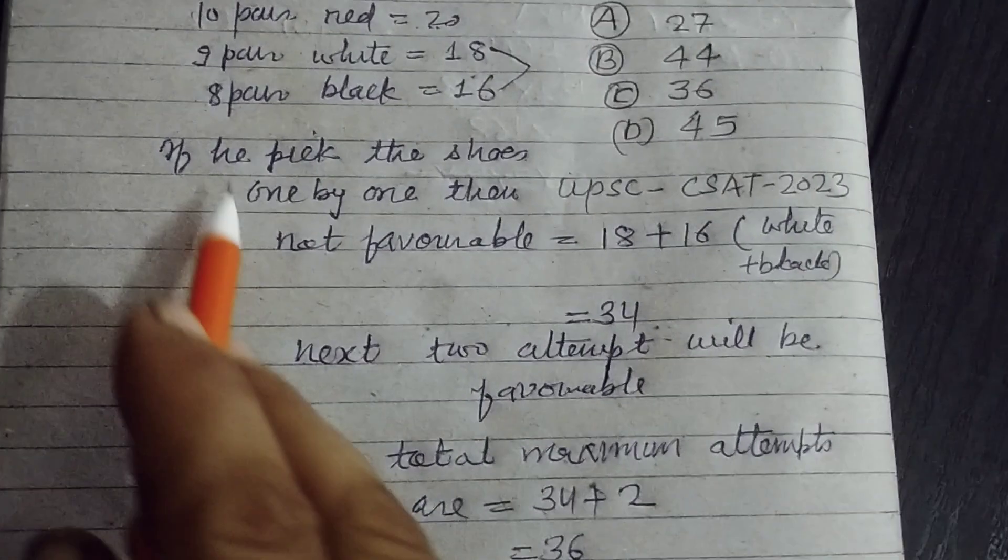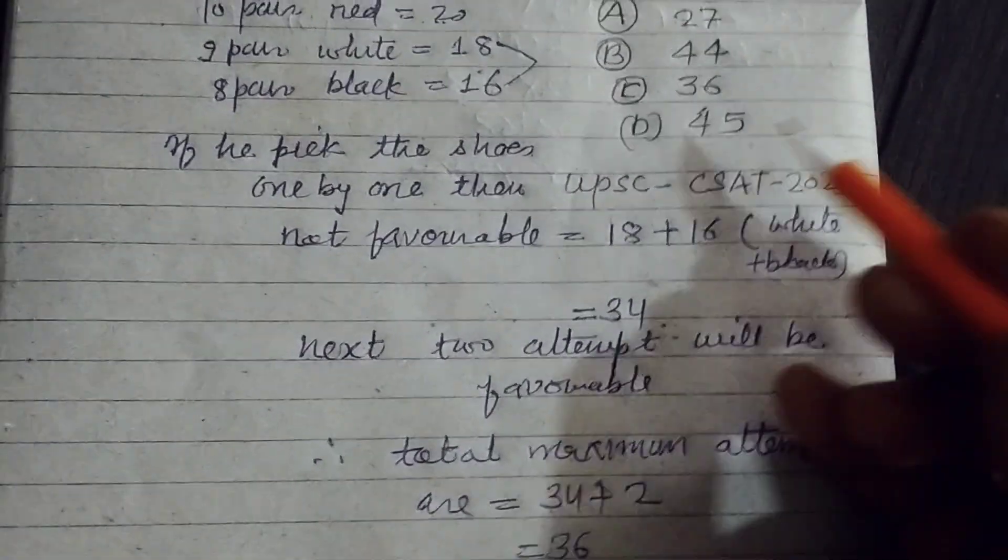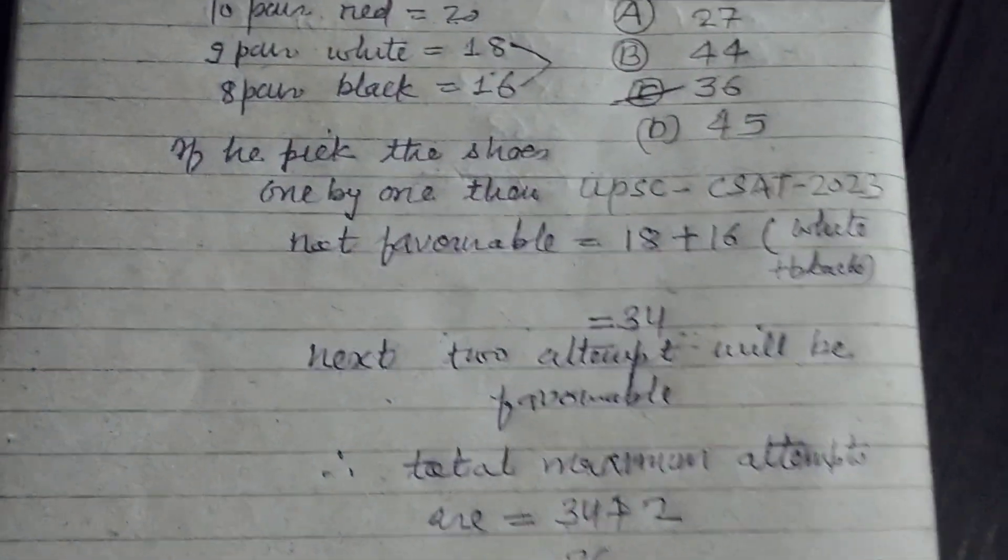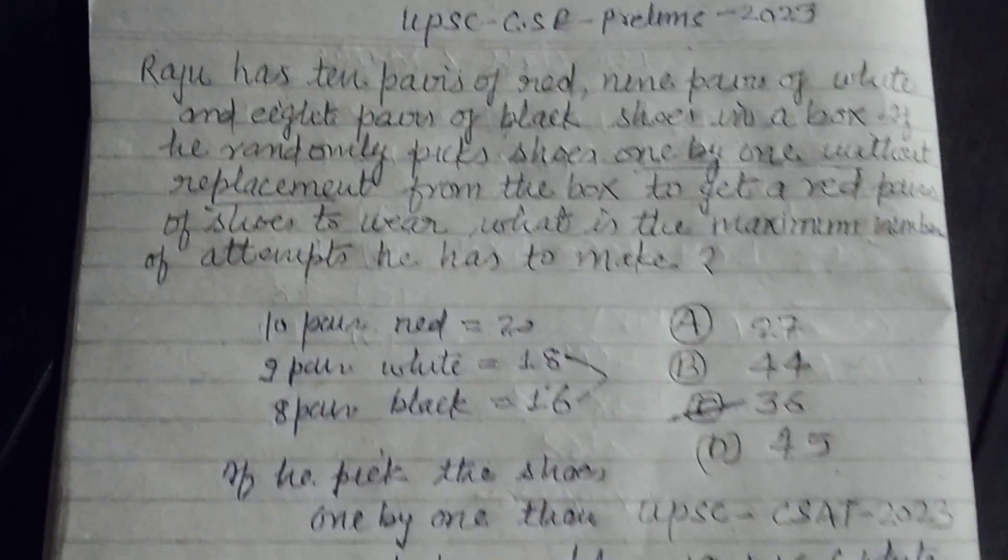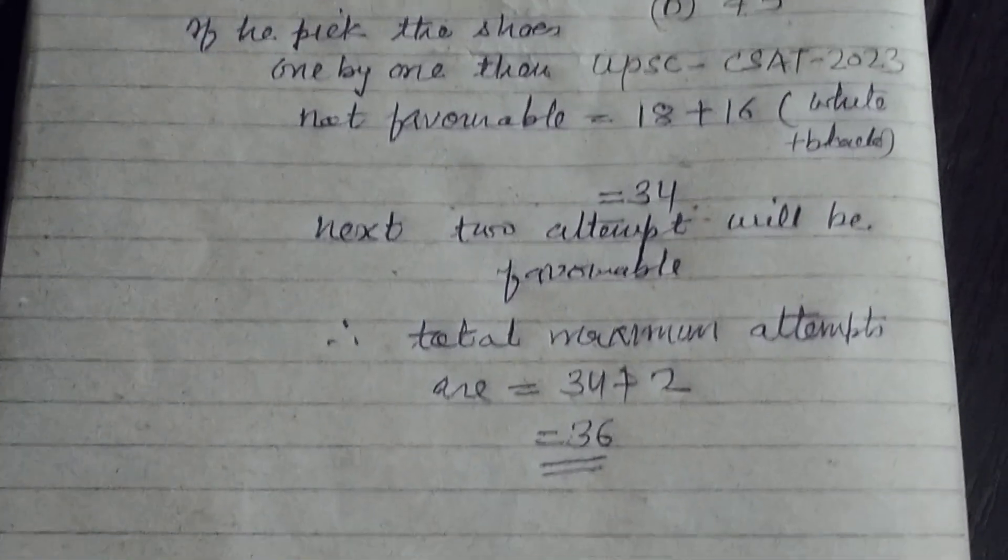36 is the maximum number of attempts in which he can wear the red shoes. So the answer to this question is 36, which is found in option C. I hope you got it. Please like the video, subscribe to the channel, thanks for watching.